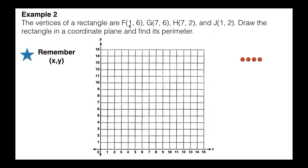F is at (1, 6) — over 1, up 6, right there. Label it. G is at (7, 6) — go 7 over on my x axis, up 6, right there. Label that: G at (7, 6). Then H at (7, 2) — over 7, up 2, right there. Label it. And finally, J is at (1, 2) — over 1, up 2, right there. Label it. Now we've got our points all plotted. We connect the dots: F to G, G to H, H to J, and J to F, and it makes a rectangle.